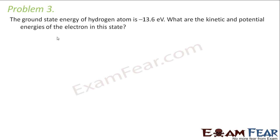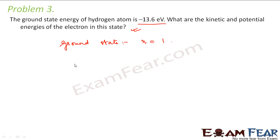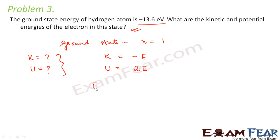Let us now look at the third problem. The ground state energy of the hydrogen atom is minus 13.6 electron volts. What are the kinetic and potential energies of the electron in this state? When we talk about the ground state, we are talking about the energy level corresponding to N equal to 1. From the expressions derived under electron orbits, kinetic energy equals negative of the total energy, and potential energy equals twice the total energy. Since total energy is minus 13.6 electron volts, kinetic energy equals 13.6 electron volts.